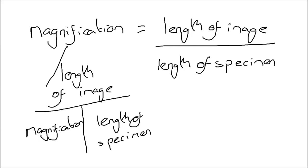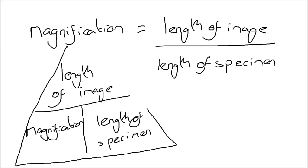That can be put into a neat formula pyramid. If you wanted to work out the length of the specimen, you put your finger over that and the length of the specimen equals the length of the image divided by the magnification. Or if you want the length of the image, it's magnification times length of specimen. Or for magnification, it's the length of the image divided by the length of the specimen. It's an easy way to handle magnification questions if you struggle to rearrange formulae.